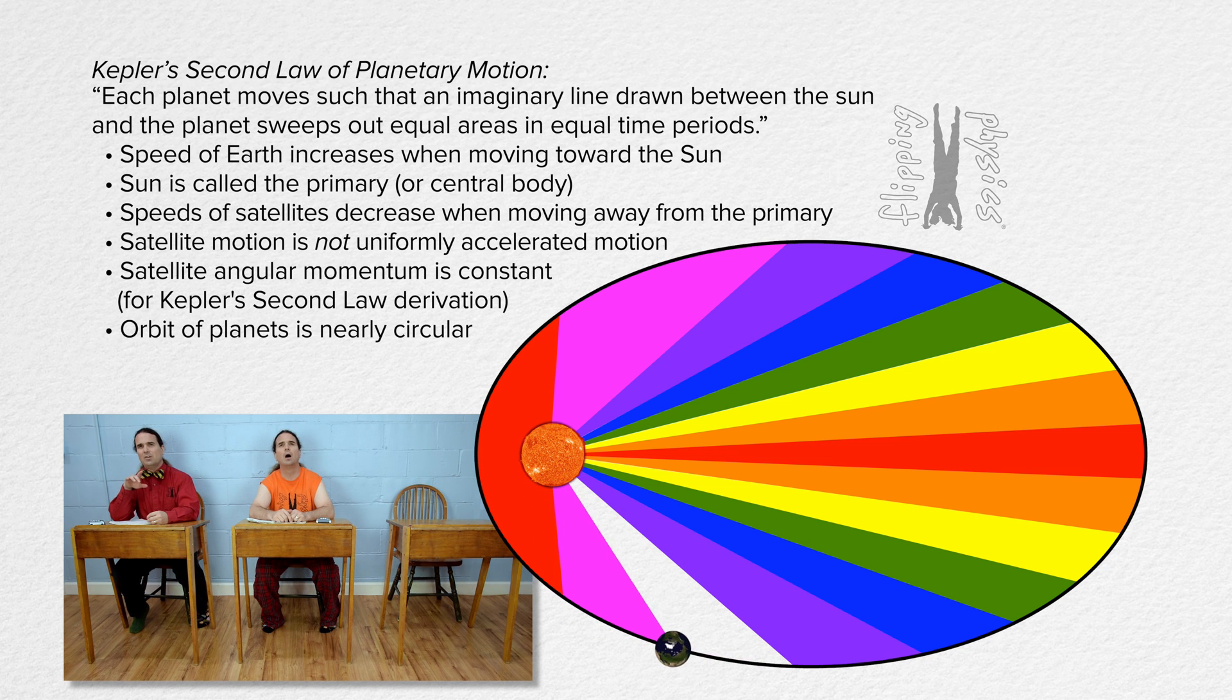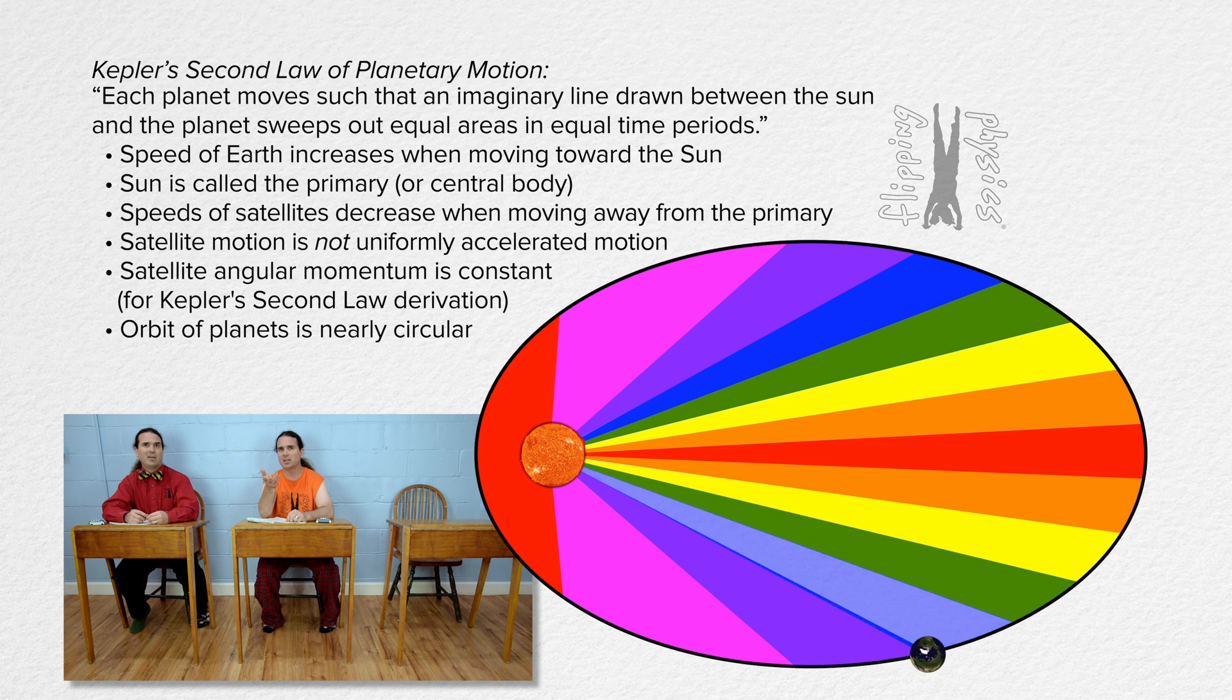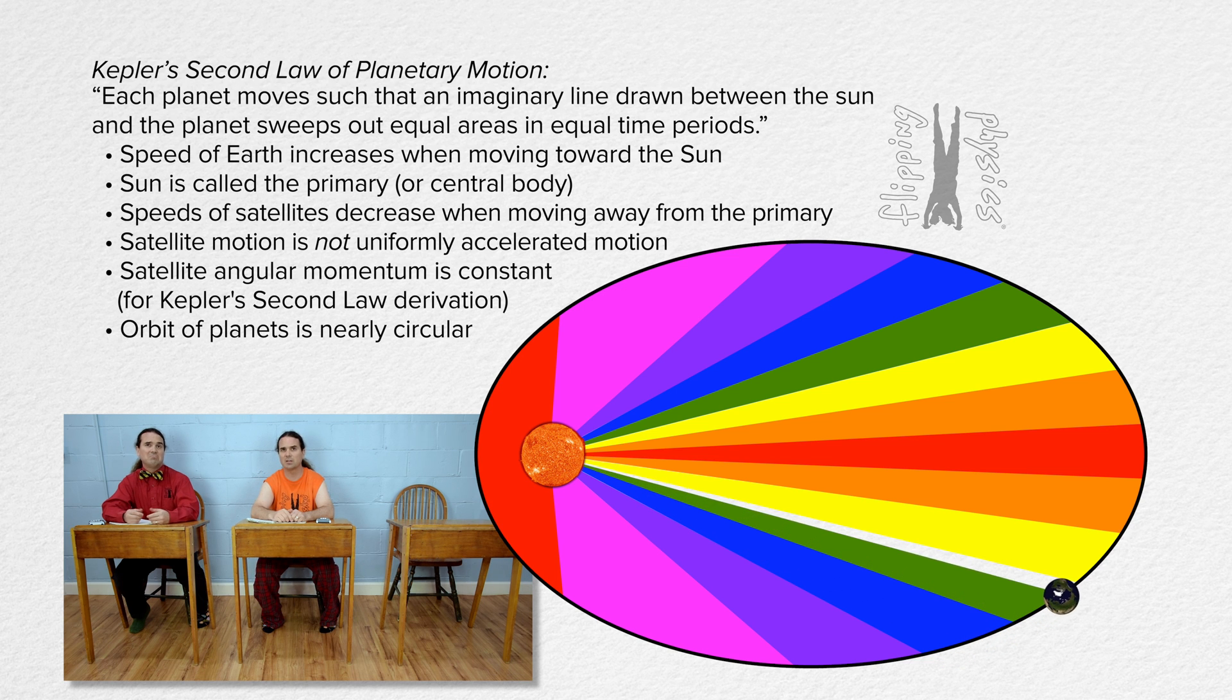I thought the orbit of all the planets was nearly circular. I think he exaggerated the eccentricity of the ellipse to make the animation more clear. That makes sense.